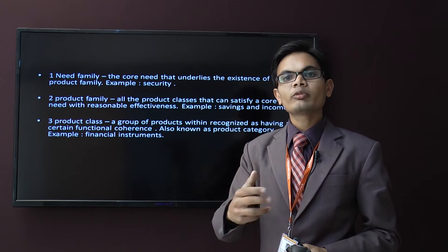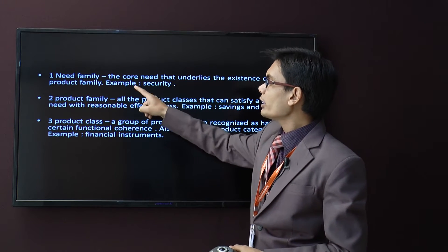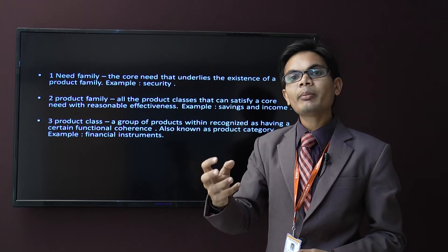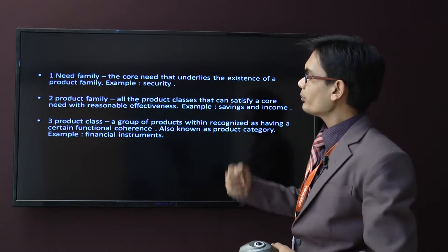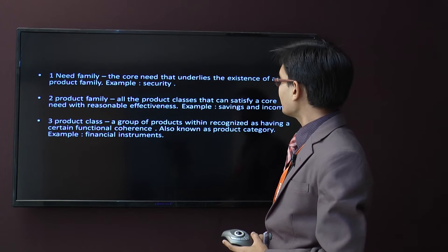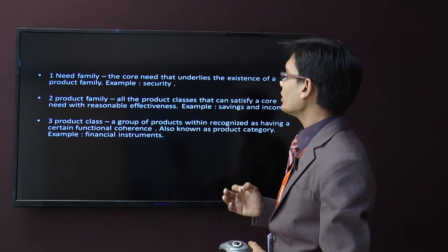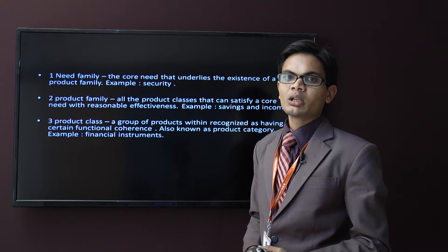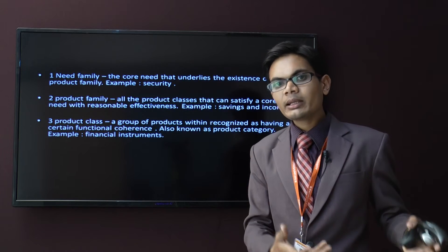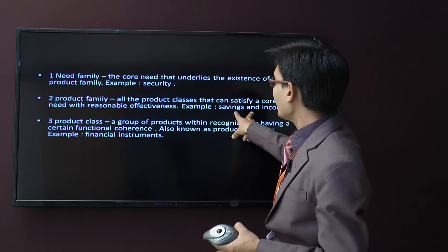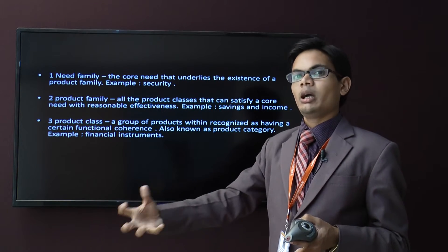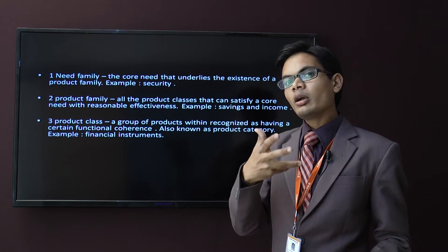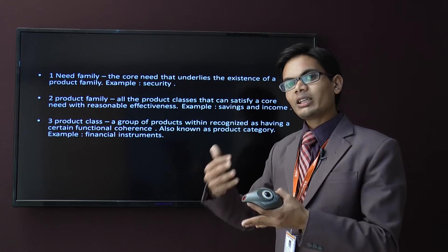I need security and a safe, secure future — that's why I am purchasing insurance. The second level is product family — all the product classes that can satisfy a core need with reasonable effectiveness. Example: saving and income. I can increase my income or increase my savings to make my future bright and secure. So the second level is product family: saving and income.